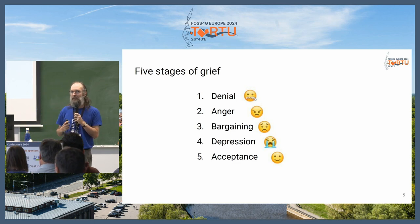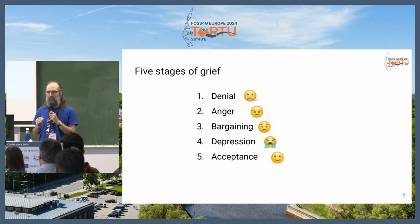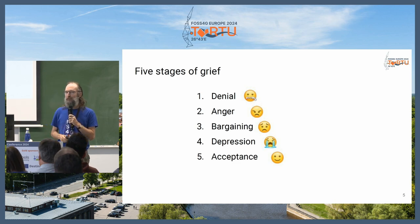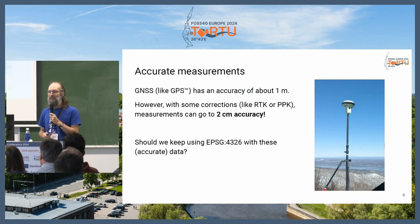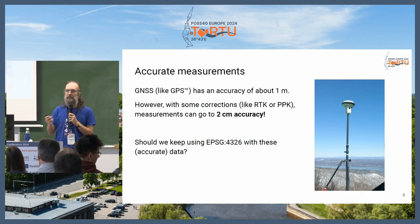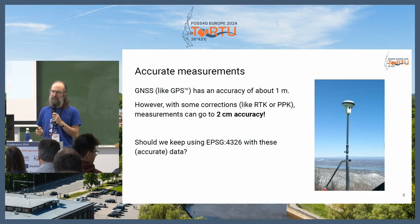I remember perfectly the denial phase, where I didn't want to read that email. I didn't want to understand that concept. I said, no, no, it cannot be. Now I think I'm between four and five. I want to make clear, I'm going to talk a lot about accurate measurements, about accuracy. The GNSS systems, by default, have an accuracy of about one meter, or even worse.